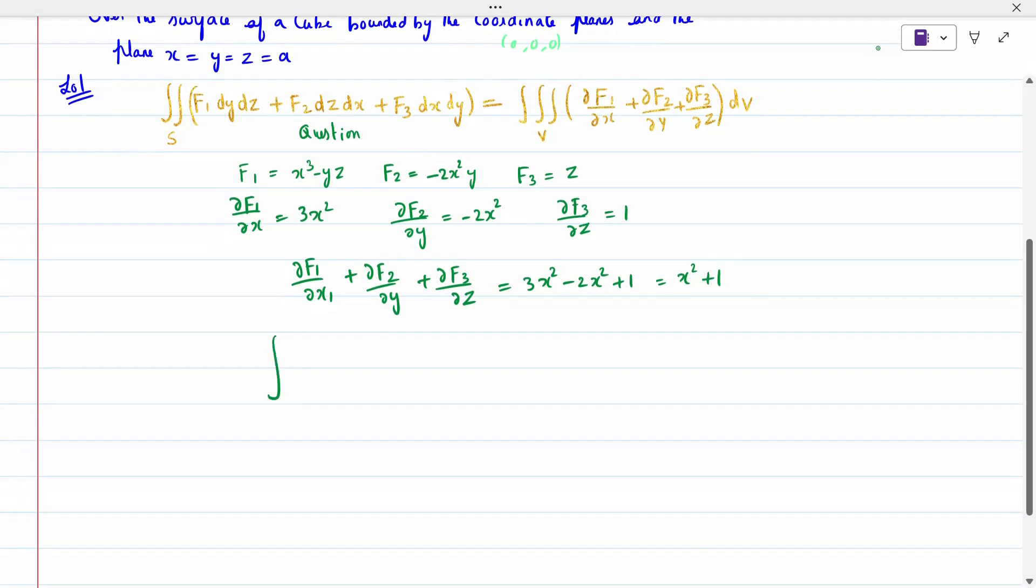Triple integration over (x² + 1) dv. dv is according to the limits whatever we write. All the limits are 0 to a. I will write dz dy dx. It is not wrong to write dx dy dz because all the limits are same. If it is different, we should be very careful when we write it.